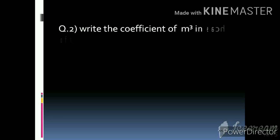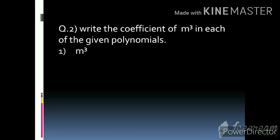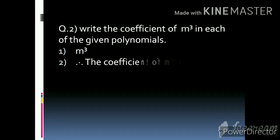Now Question 2: write the coefficient of m³ in each of the given polynomials. We have to write the coefficient with m³ — whatever number is with m³, we write that down. Question 1: m³ — with m³ no coefficient is written, so we assume 1. Therefore the coefficient of m³ is 1.